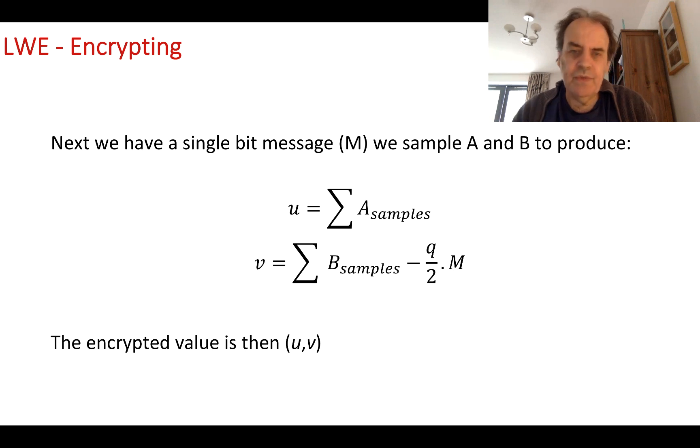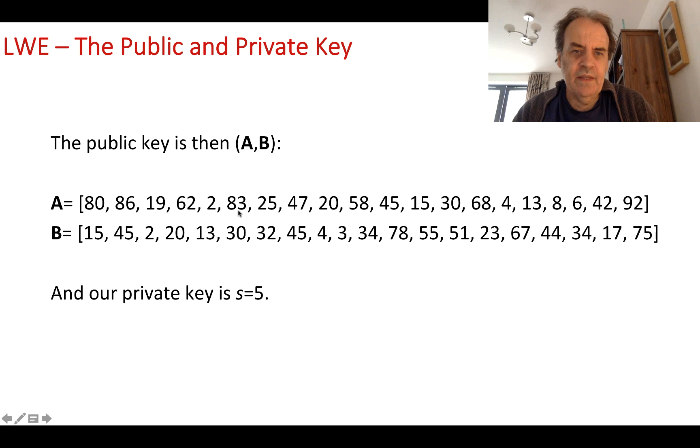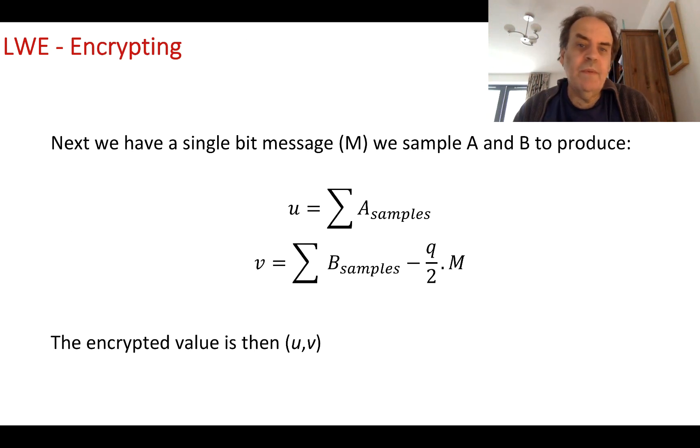We then take samples—perhaps four samples from the pairs. We take those samples and summate them to create the value of U. We then take the B samples and do the same, but this time we take away Q divided by 2 times M. This gives us U and V, where M is a single bit value. With this encryption, we take one bit at a time and encrypt it into a cipher bit. We end up with U and V.